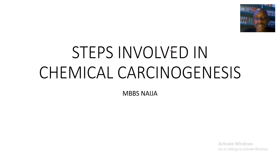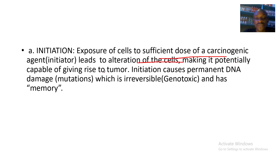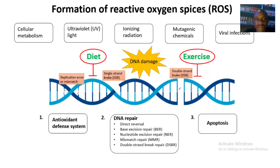We'll be talking about the steps involved in chemical carcinogenesis. First, we have initiation, which is exposure of cells to a sufficient dose of carcinogenic agents, leading to alteration of the cells making them potentially capable of giving rise to a tumor. Initiation causes permanent DNA damage, which is irreversible and has memory.